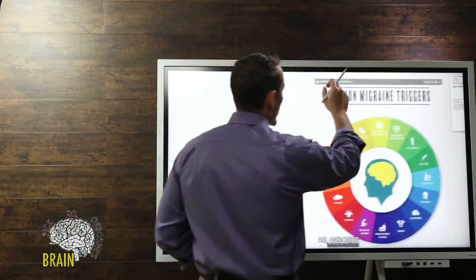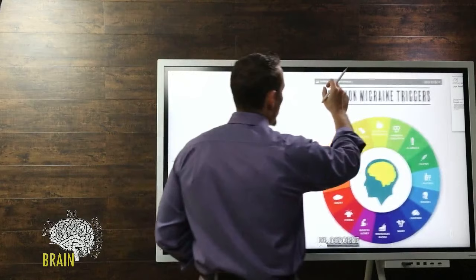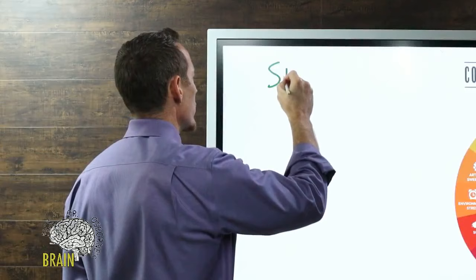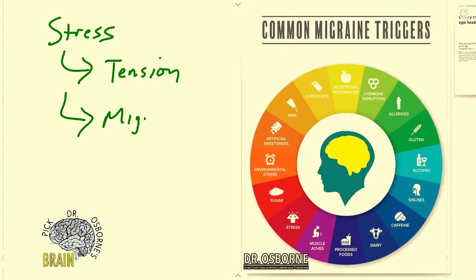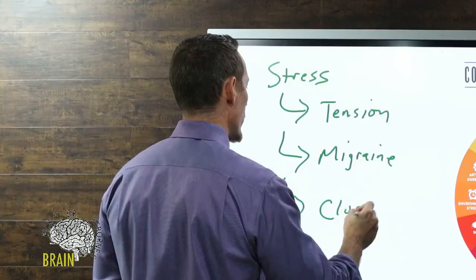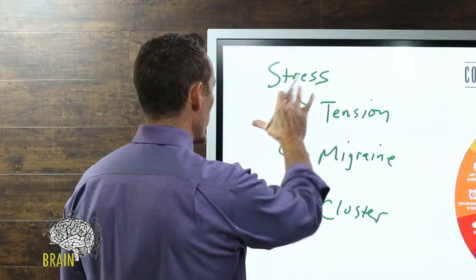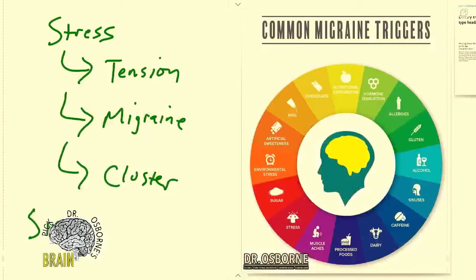There are really four primary types of headaches. Stress can induce the three major forms: stress can cause tension-style headaches, stress can also trigger migraines, and it can be a trigger for cluster headaches. There's one other primary type where stress doesn't play as much of a role, and that's sinus headaches.